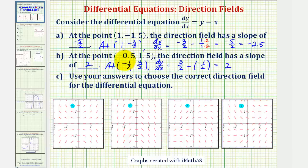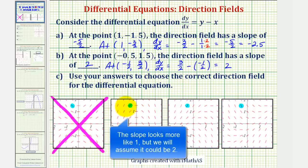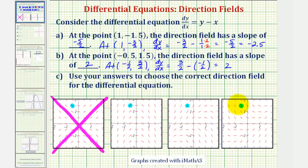Since the derivative function was equal to positive 2 at this point, we're looking for segments that have a slope of positive 2. Notice how this segment here has a negative slope, therefore this could not be the correct direction field, so we can eliminate it. The slope of this segment could be positive 2, as well as this segment here, but our fourth direction field's segment has a negative slope, and therefore it could not be the correct direction field.